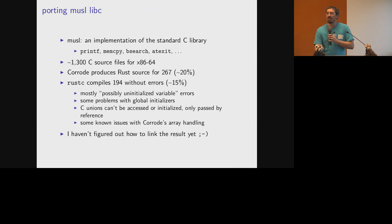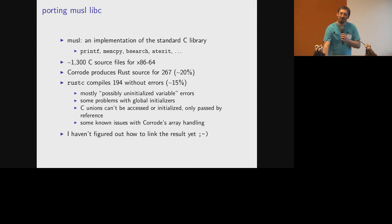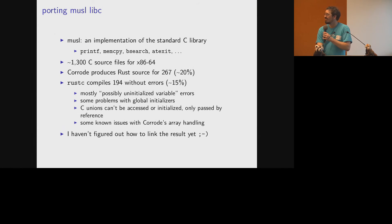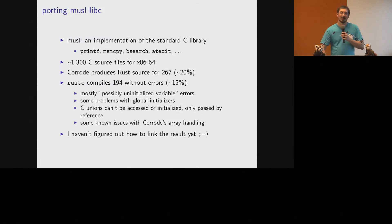The other thing to note about musl libc is that a big chunk of it is inline assembly. Since I'm not translating that at all yet, that'll be a pretty substantial chunk of the remaining 80 percent. I started trying to figure out how Rust's inline assembly syntax was supposed to work, got confused, and decided to go do something else.